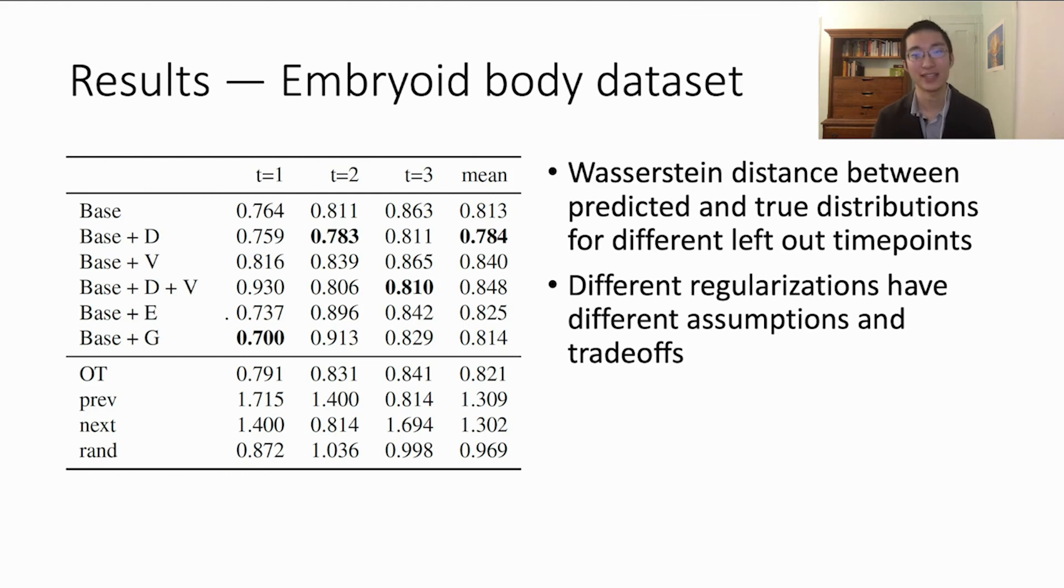To evaluate our model, we use the Wasserstein distance between the predicted and ground truth distributions for models where we leave one time point out. We find the different regularizations have different tradeoffs based on the assumptions they make. For example, growth is the most difference across cells early, thus taking into account growth is most important when leaving out time point one. While leaving out the second time point, density regularization is especially important.